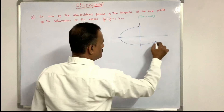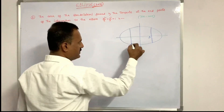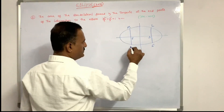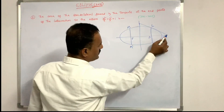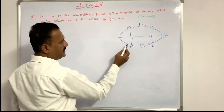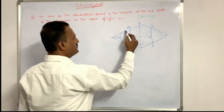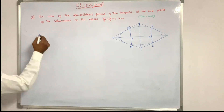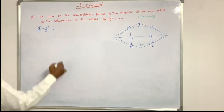For the ellipse, S = 0. The latus rectum endpoints are L, L', M, and M'. We draw tangents at these endpoints of the latus rectum — tangent at L, tangent at L', tangent at M, and tangent at M'. These points form a quadrilateral. Given ellipse equation: x²/9 + y²/5 = 1.